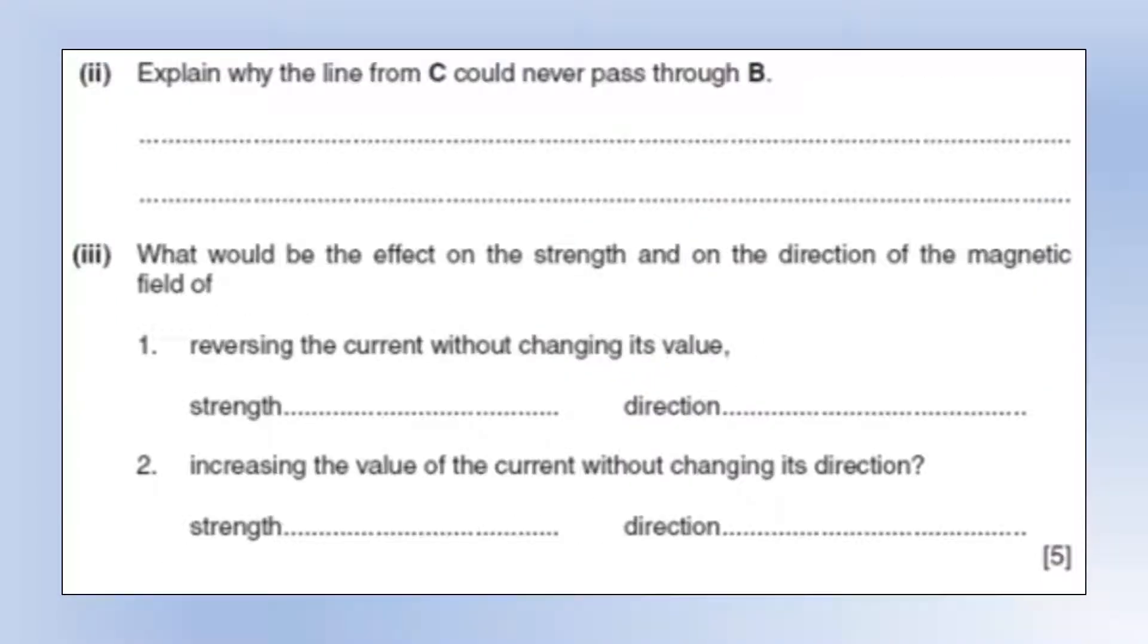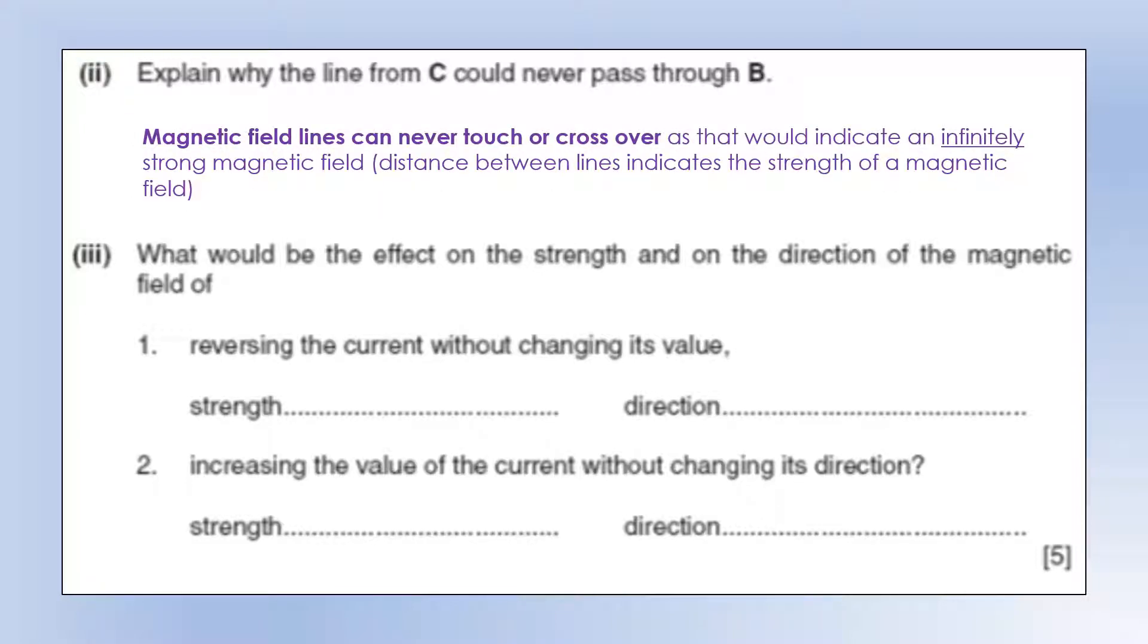Explain why the line from C would never pass through B. Simply put, magnetic fields can never touch or cross over one another. That's a rule you can always apply. They're never going to do that. And the reason they don't do that is it would indicate an infinitely strong magnetic field. And that's because the distance between the lines tells you how strong they are. So if two lines were at the same place with a separation of zero, that would indicate an infinitely strong magnetic field. And theoretically, if you had an infinitely strong magnetic field, every magnetic thing in the universe would either be attracted, would end up being attracted or repelled by it, which is a bit odd.